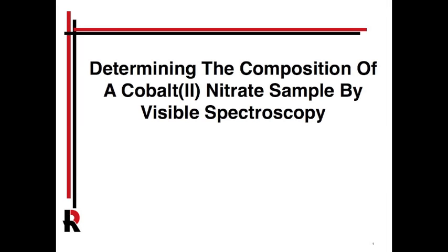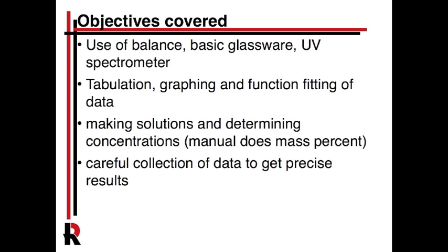This is the 'Determining the Composition of a Cobalt Nitrate Sample by Visible Spectroscopy' from the general chemistry lab manual. In terms of what we expect you to learn today, the major focus will be using a UV spectrophotometer, but there's also tabulation, some graphing, manipulation of solution concentrations, mass percent, and basic function fitting.